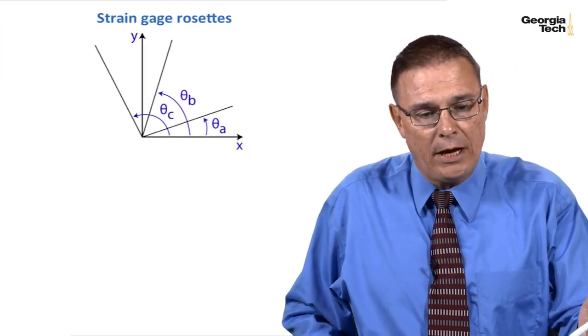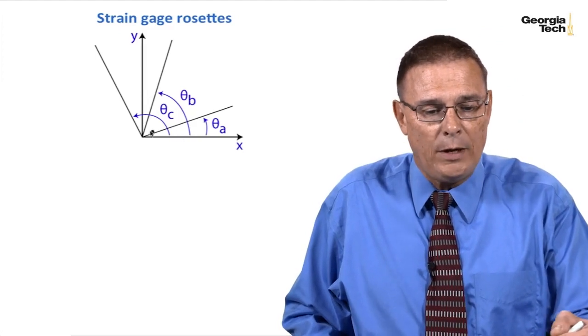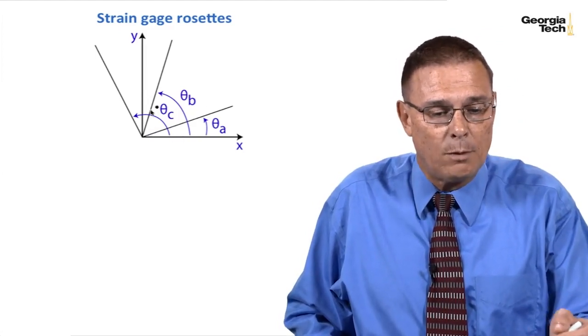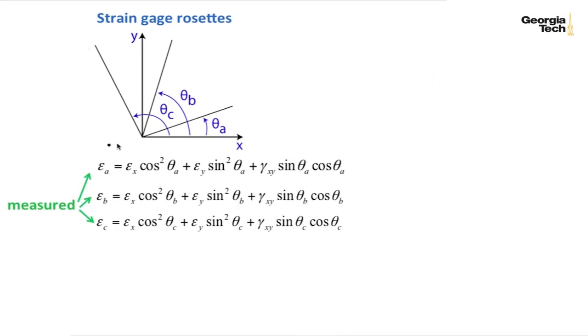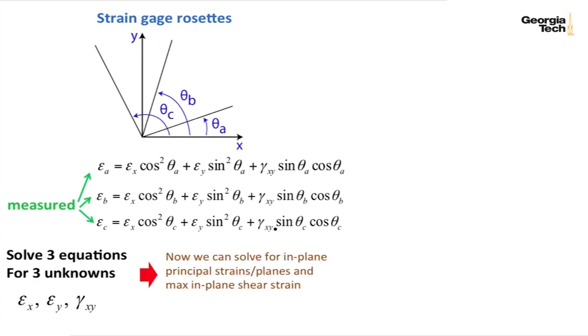So here is a strain gauge rosette generically. We are able to measure the normal strain in three different directions at three angles, and we can come up with three equations then. The normal strains in the a, b, and c directions are measured, and the three unknowns are on the right-hand side: our two normal strains, epsilon_x and epsilon_y, and the shear strain epsilon_xy. Once we know those, we can then solve for the in-plane principal strains, the principal planes, and the max in-plane shear strain.